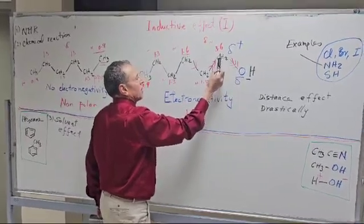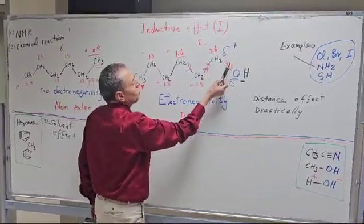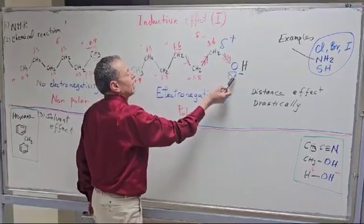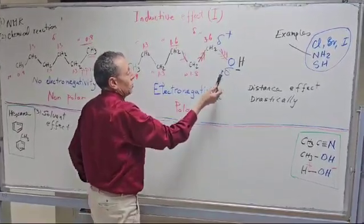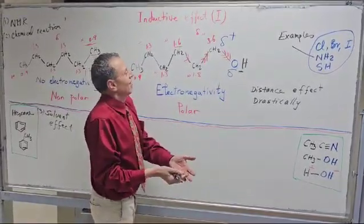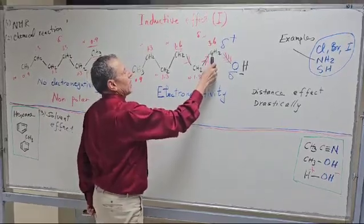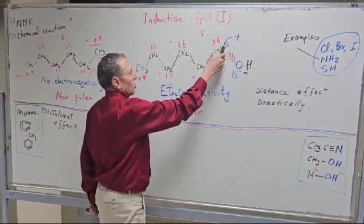Oxygen is more electronegative than carbon, so it withdraws the electrons. That's why it becomes a negative charge because it becomes more rich in electrons, and this becomes more poor in electrons, that's why it will be a positive charge.